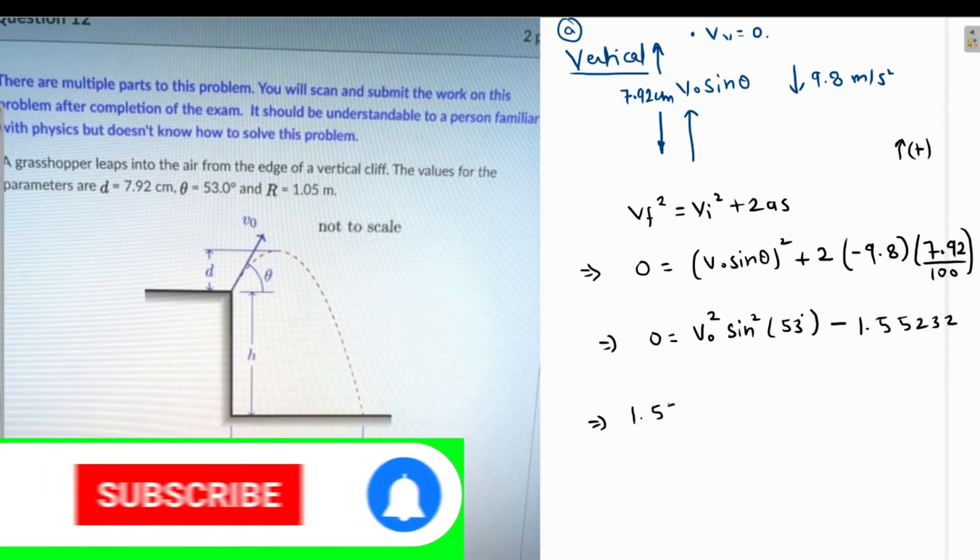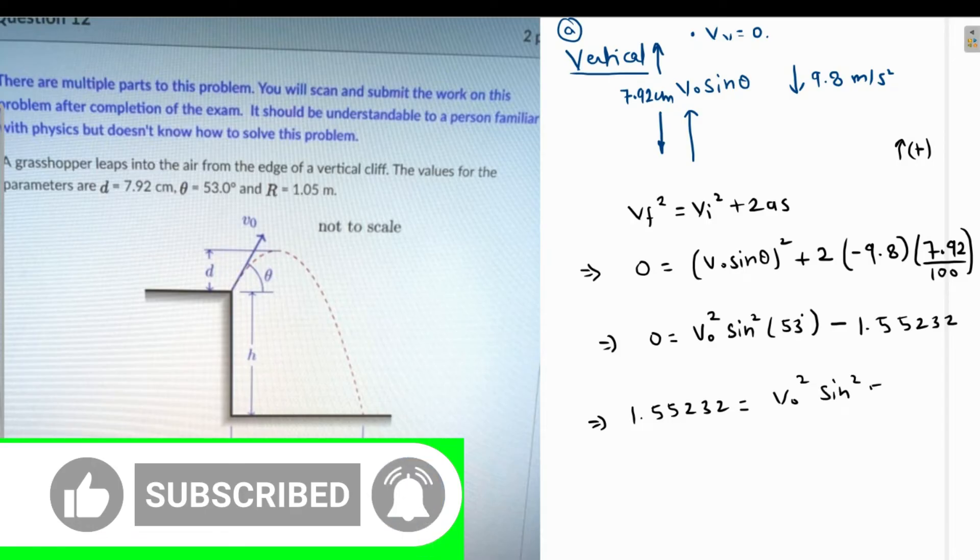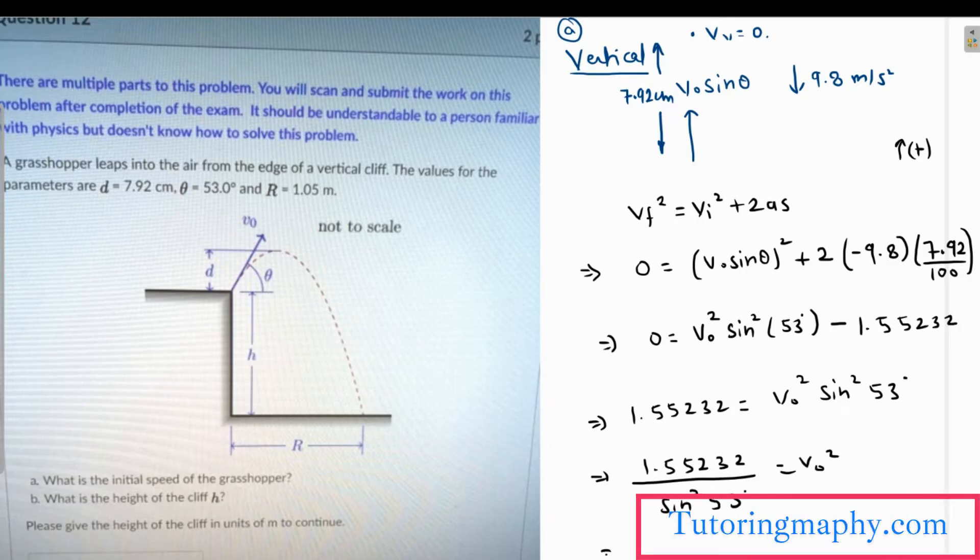Adding 1.5523 to both sides and dividing both sides by sine squared 53 degrees, this is the value of v naught squared. By taking square root of both sides, the value of v naught comes out as 1.56 meters per second up to two decimal places. That is the answer to part a.